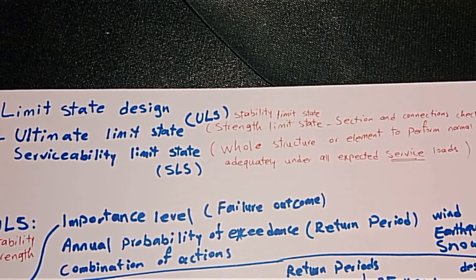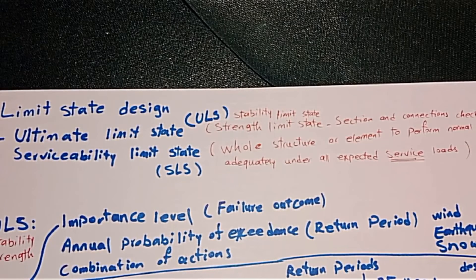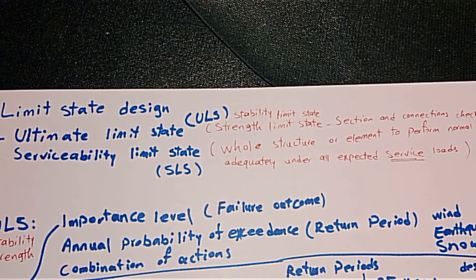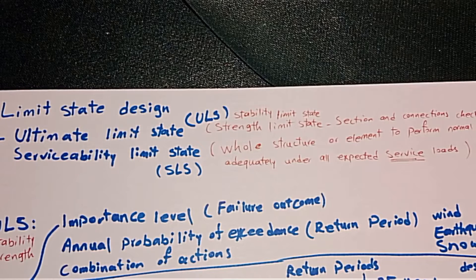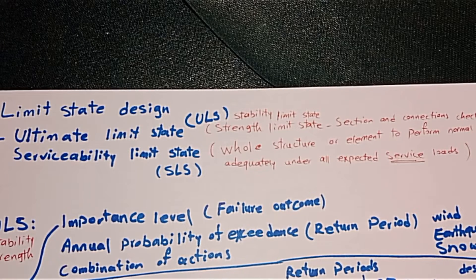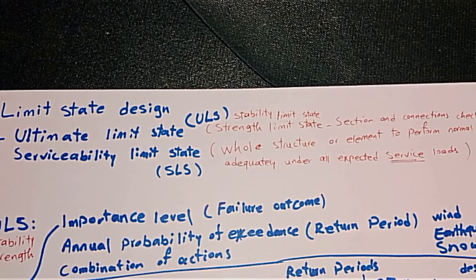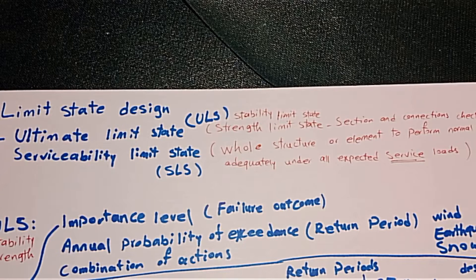Hello everyone, today I'm going to talk about limit state design in very basic and simple words. In general we have two limits for design: Ultimate Limit State, or ULS, and Serviceability Limit State, or SLS. Ultimate limit state deals with the strength of material, sections, and connections to take the loads, and also stability like sliding and overturning. For serviceability limit state, we're looking at service loads and combinations applied on the structure, and that the structure performs normally and adequately.